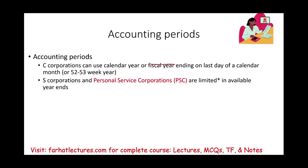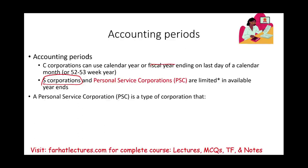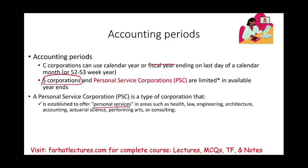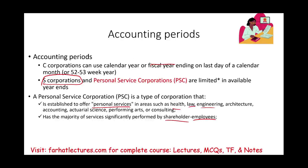S corporations and personal service companies are limited to the calendar year because they are pass-through entities that must align with individuals. A personal service company is a type of corporation established to provide personal services in health, law, engineering, architecture, accounting, actuarial services, or consulting — essentially doctors, lawyers, and accountants. It requires that the majority of services are performed by shareholder-employees, and that more than 10% of the stock is held by shareholder-employees.